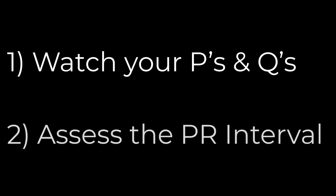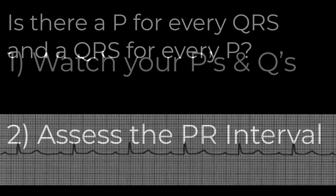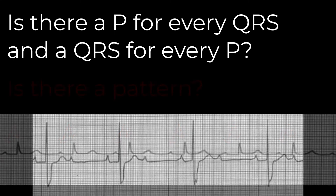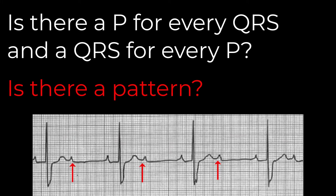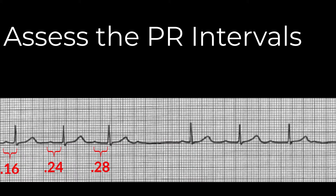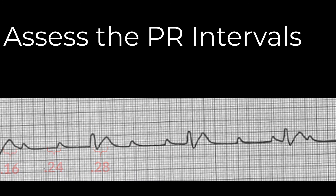There are two key components to identifying heart blocks. The first step is to identify if there is a P wave for every QRS, and if there is a QRS following every P wave. If not, is there a pattern you can identify to where those aren't matching up? The second step is to assess the PR intervals and determine if they're normal — are they consistent in length, changing in length, or is it even possible to measure those PR intervals? We're looking for the pattern to those changes because that can be critical in identification.